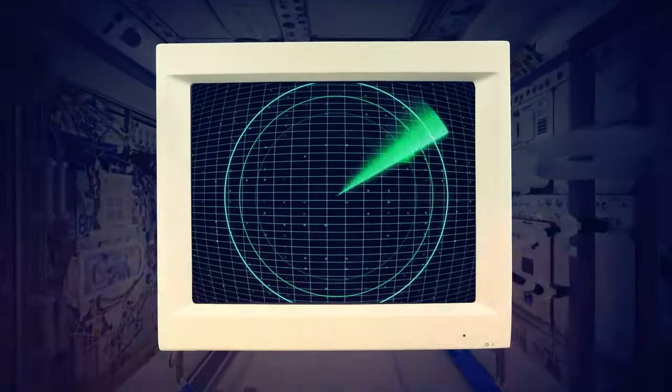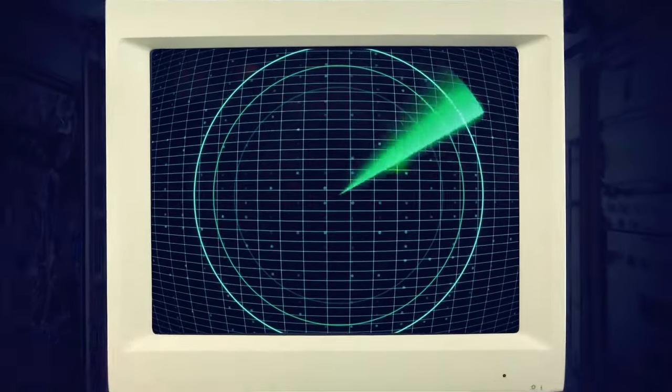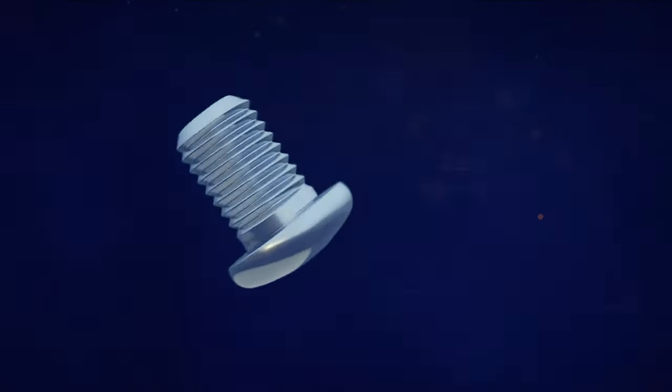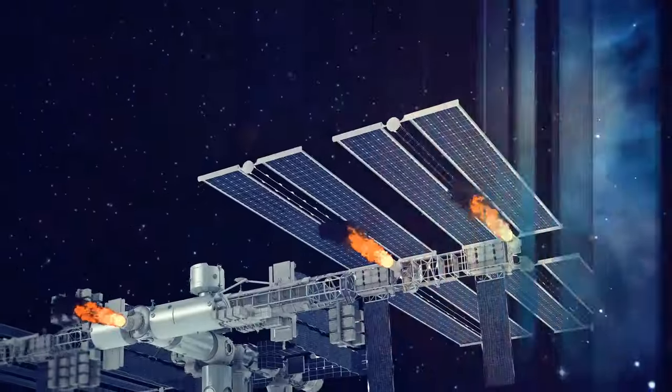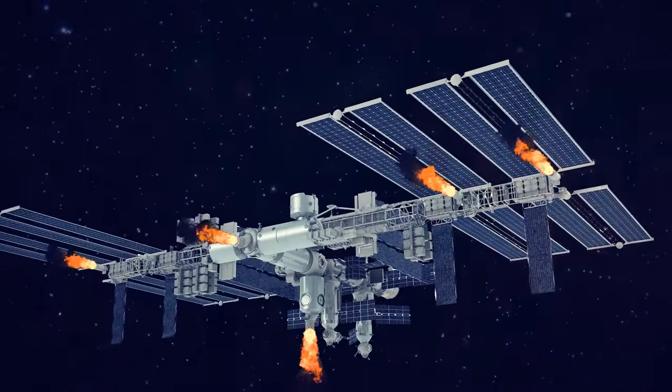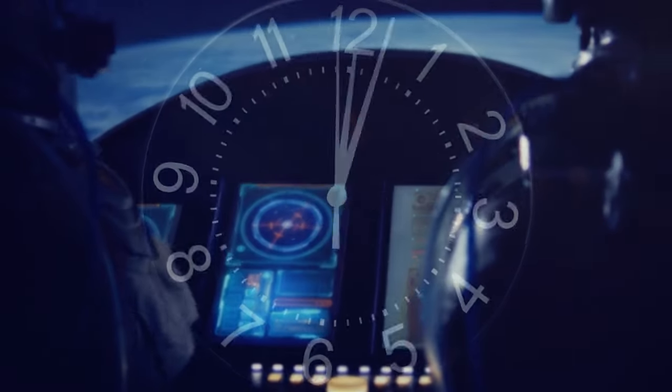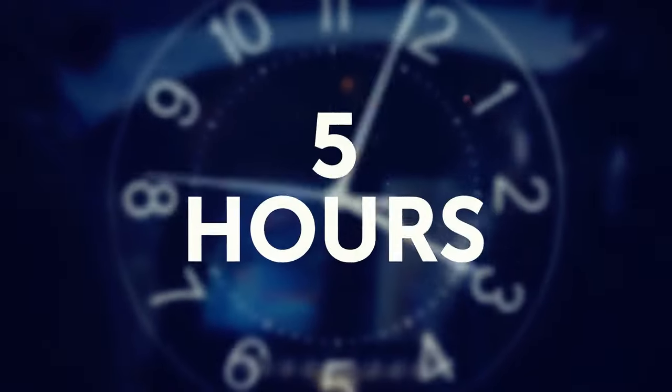When operators receive a signal about approaching debris, they analyze it. Depending on the data received, the crew begins to act in a certain way. If it's something small and heading for some part of the ISS, the astronauts should evacuate from this part. And after that, they'll do repairs there. If something big is approaching, the entire station can perform an evasive maneuver with the help of the engines or a docked spacecraft. One such trick required about five hours of hard work. The station is a big, clumsy ship, so it's important to know about the threat in advance.